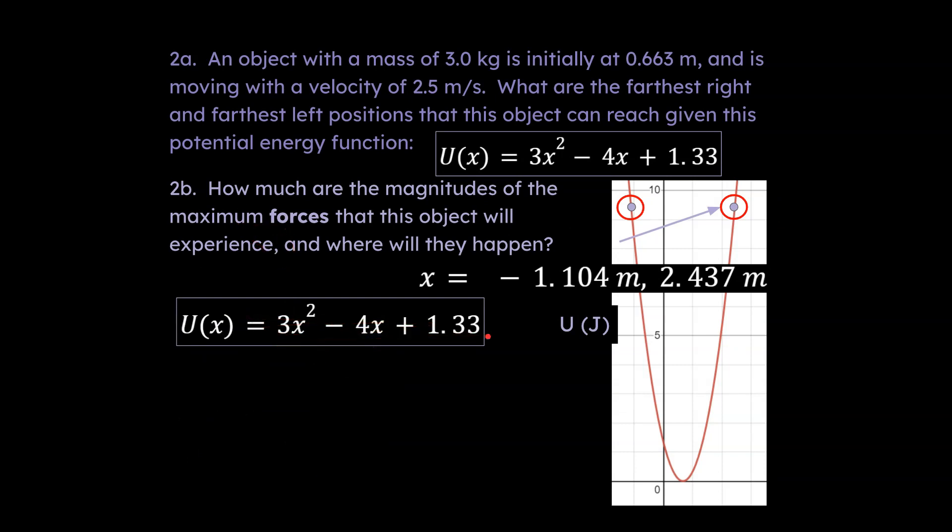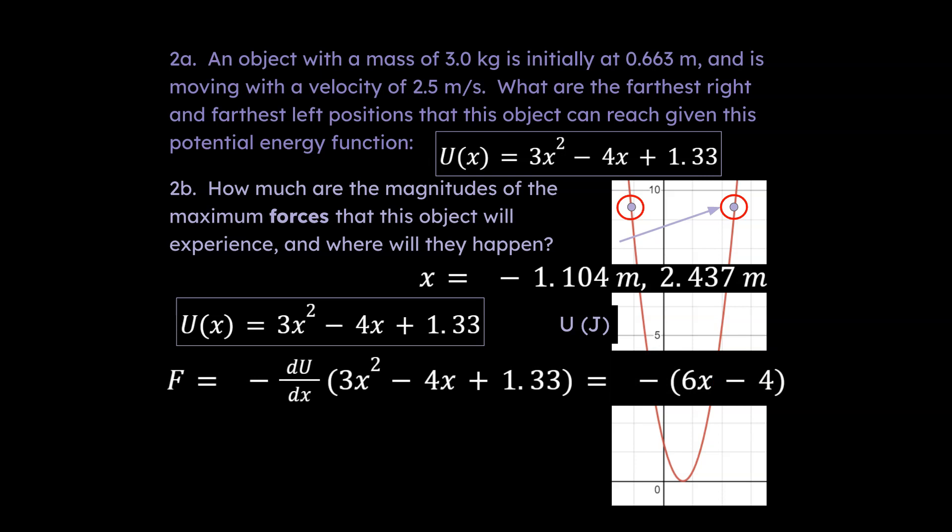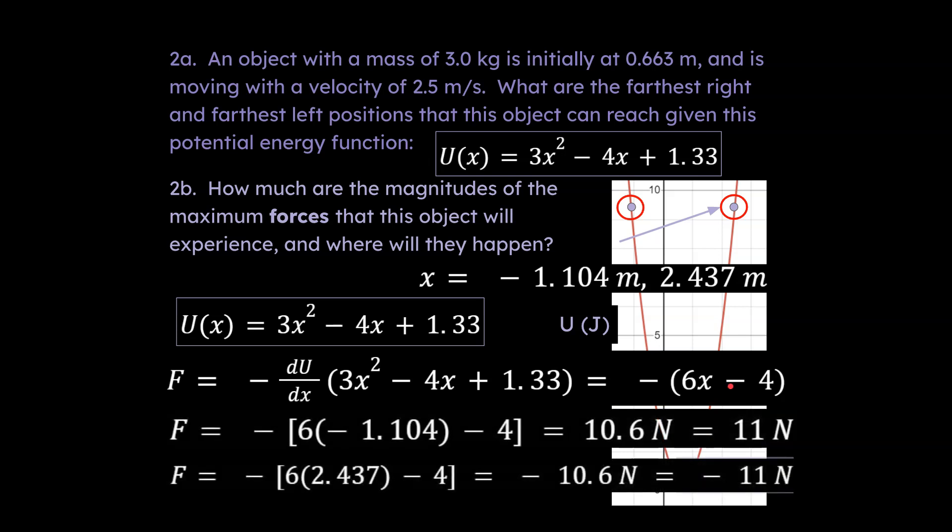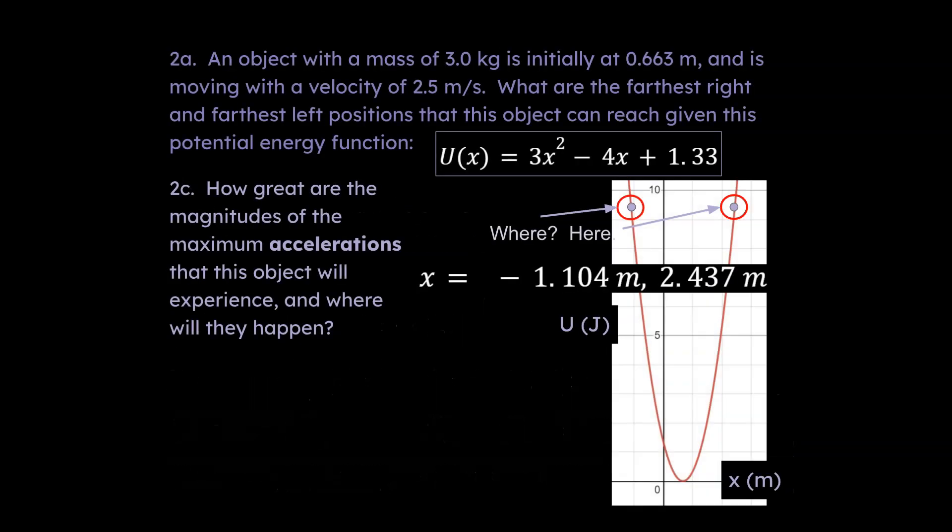Let's break down part b and take a look at the maximum force. How would we solve for this? This is our function. How would we get our force values at these two positions? Pause the video right now. Hopefully you paused or you have another opportunity to pause right now. Look at your equation sheet and think, I have to do the inverse of integration, so I'm going to take the derivative of this function. I get negative (6x minus 4), and then I go ahead and plug in my two x values, and I end up with these forces. The question asks for the magnitudes of the forces, so we'll call that 11 newtons in each of those locations.